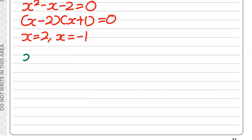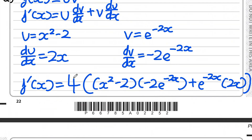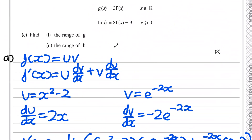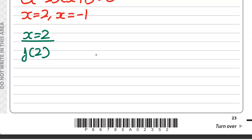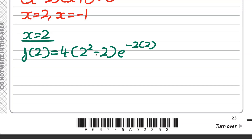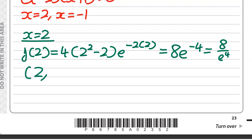Starting with x equals 2: we substitute into f(x). f(2) equals 4 times (2 squared minus 2) times e to the power of minus 2 times 2. That gives 4 times 2 times e to the power of minus 4, which equals 8 e to the power of minus 4. I'd prefer to write this as 8 over e to the power of 4, since the negative power means it's in the denominator. So one stationary point is (2, 8/e⁴).